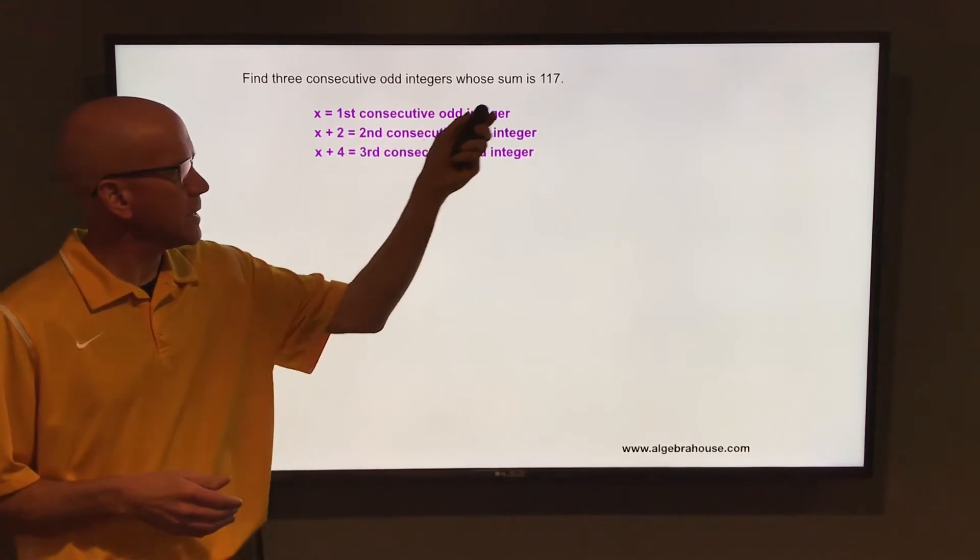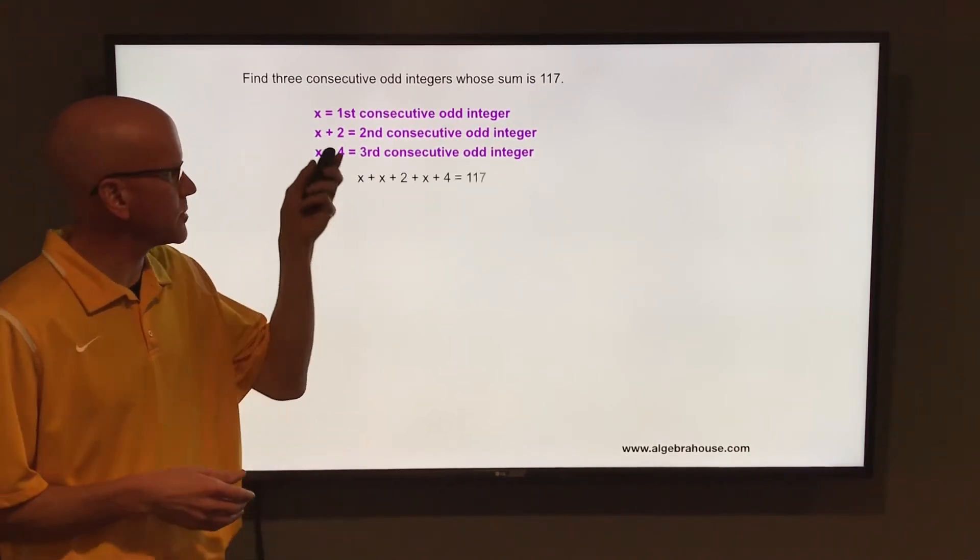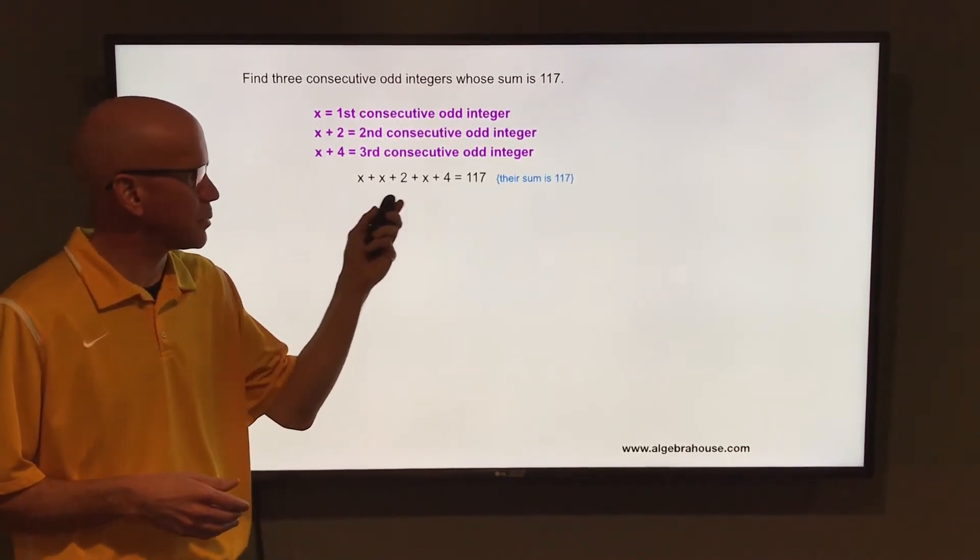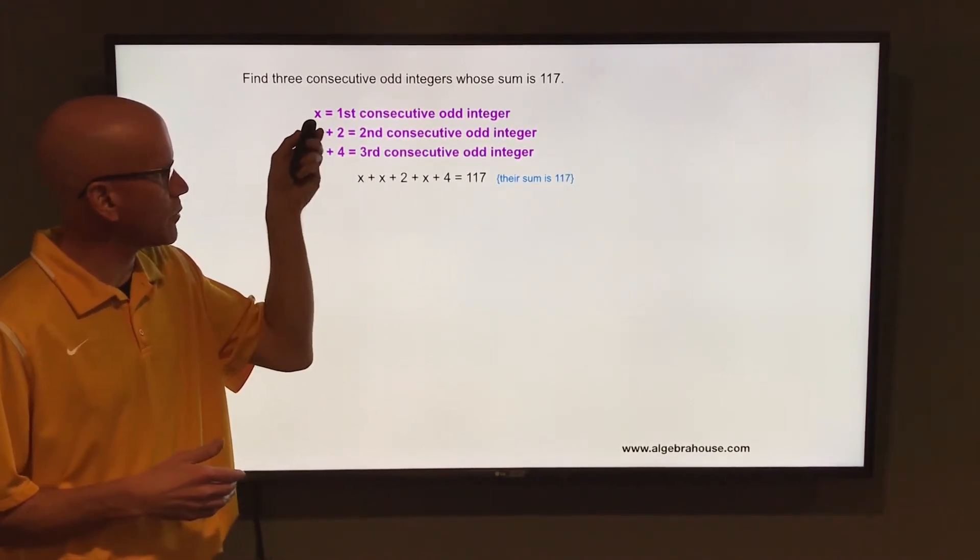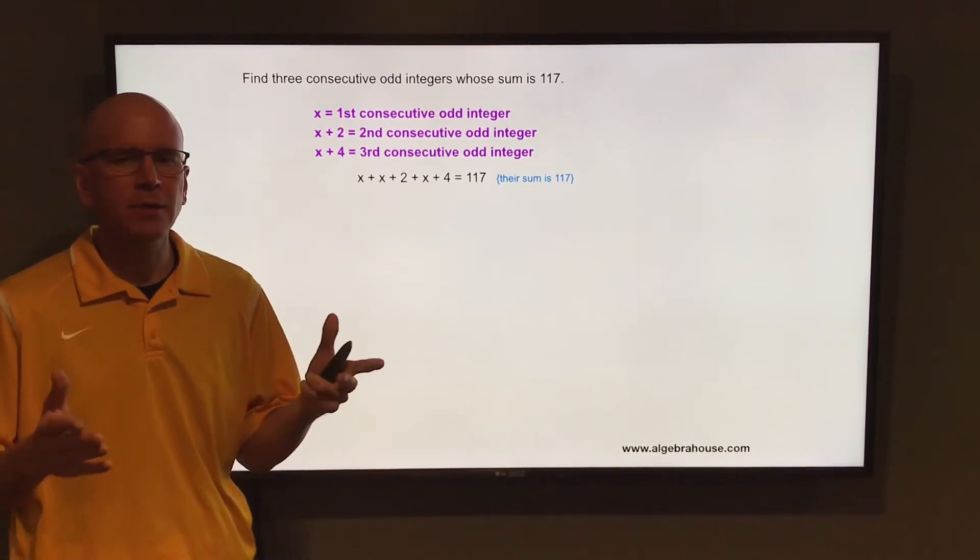The sum of those three is 117. So add those three together, x, x plus 2, and x plus 4, that equals 117. Now if you solve that for x, you'll know the first consecutive odd integer, and then you can get the other two.